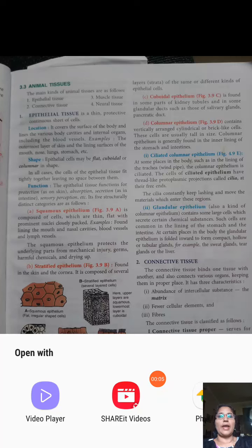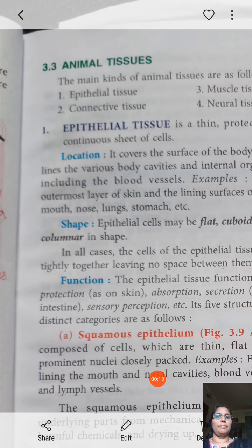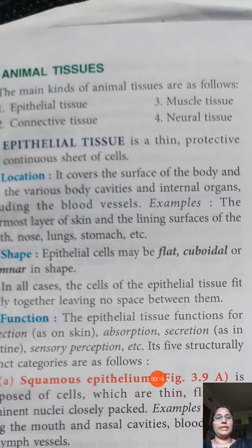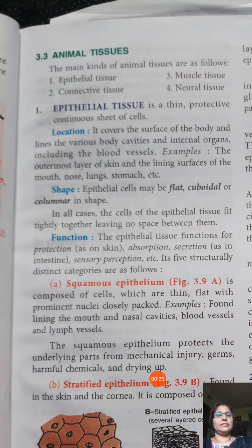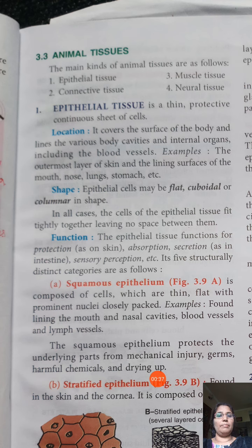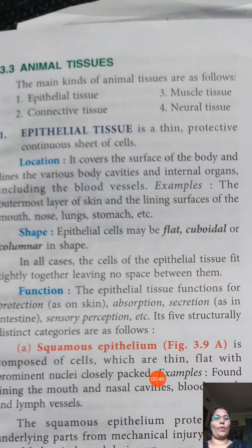Today let us learn about animal tissue. There are mainly four kinds of animal tissues: epithelial tissue, connective tissue, muscular tissue, and neural tissue. Epithelial tissue covers the body surface as well as many organs, and also lines the internal parts of blood vessels and organs.